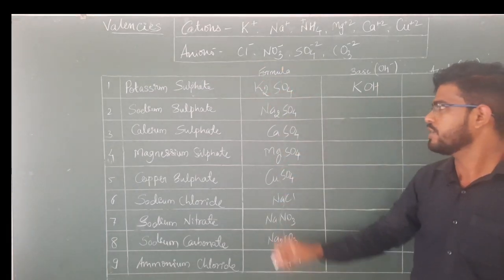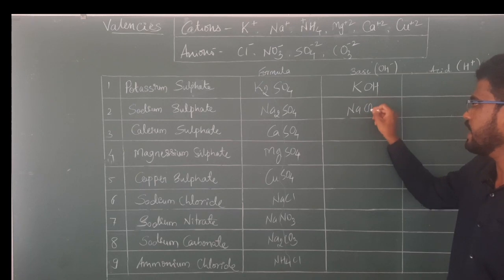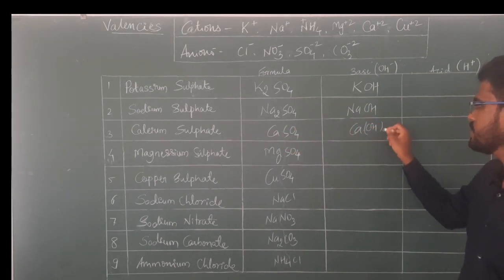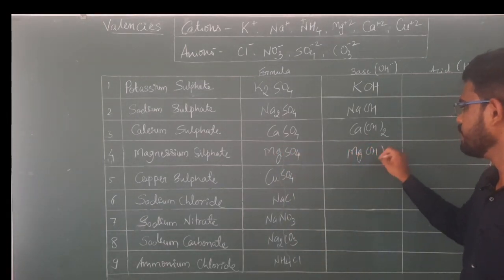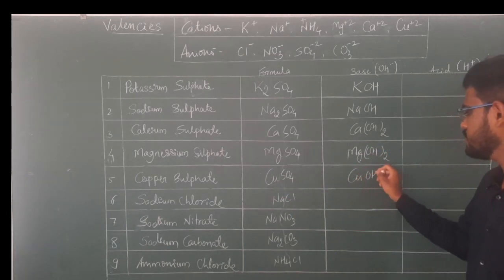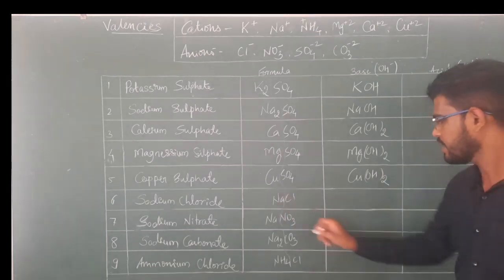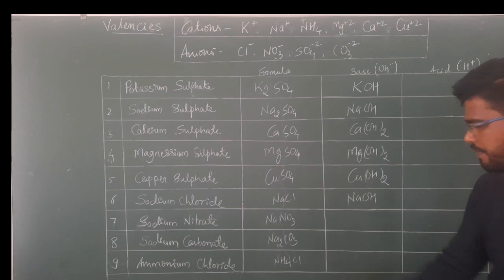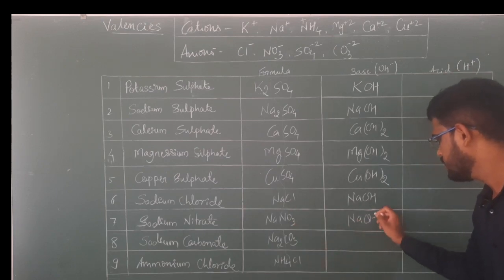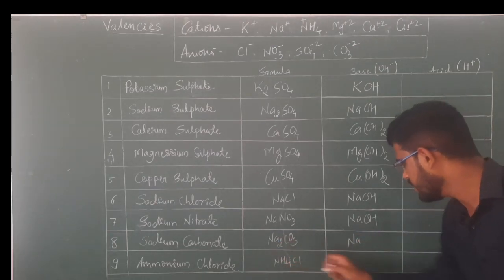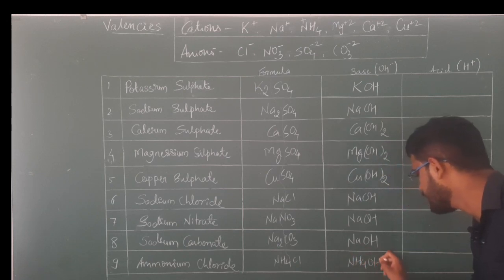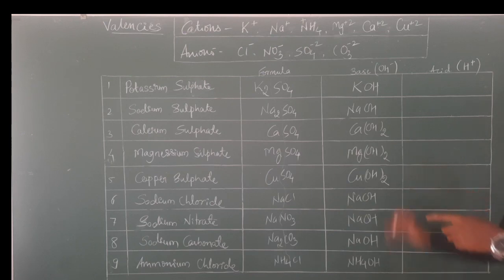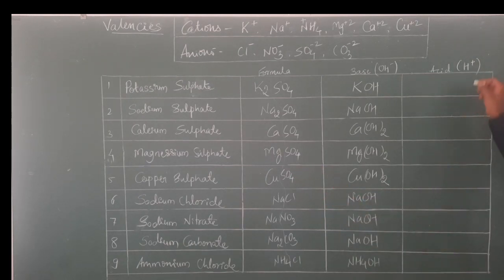Taking K with OH gives KOH. Na with OH gives NaOH. Calcium with OH — cross-multiplying valences — gives Ca(OH)₂. Magnesium with OH gives Mg(OH)₂. Copper with OH gives Cu(OH)₂. Sodium again gives NaOH. And NH₄ with OH gives NH₄OH. To every first entity of the salt you attach OH — all of these are the respective bases for those salts.